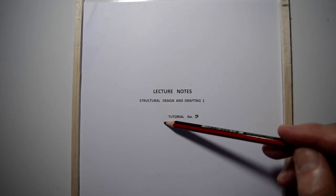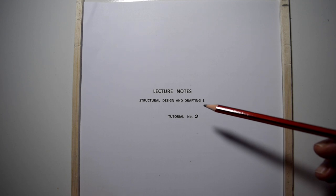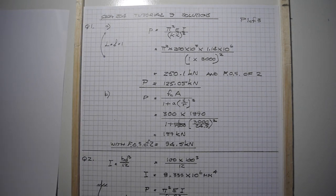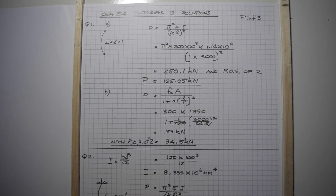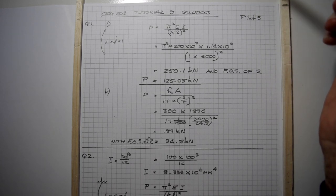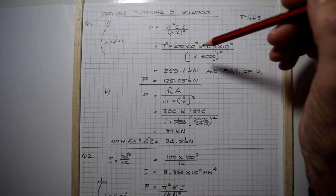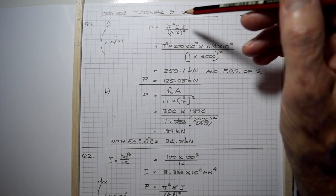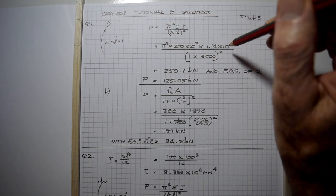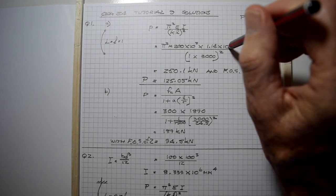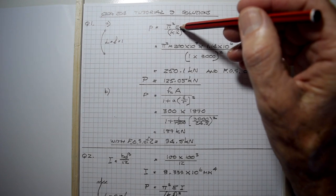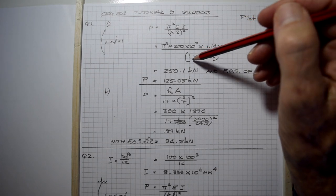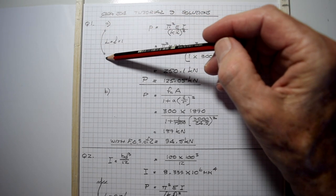Tutorial number nine for CEA 204 about struts and columns. Question A: we're looking for the actual load that this particular section will take. We have a moment of inertia of 1.14 times 10 to the 6, Young's modulus for steel of 200 by 10 cubed, and the effective length where L equals 1.